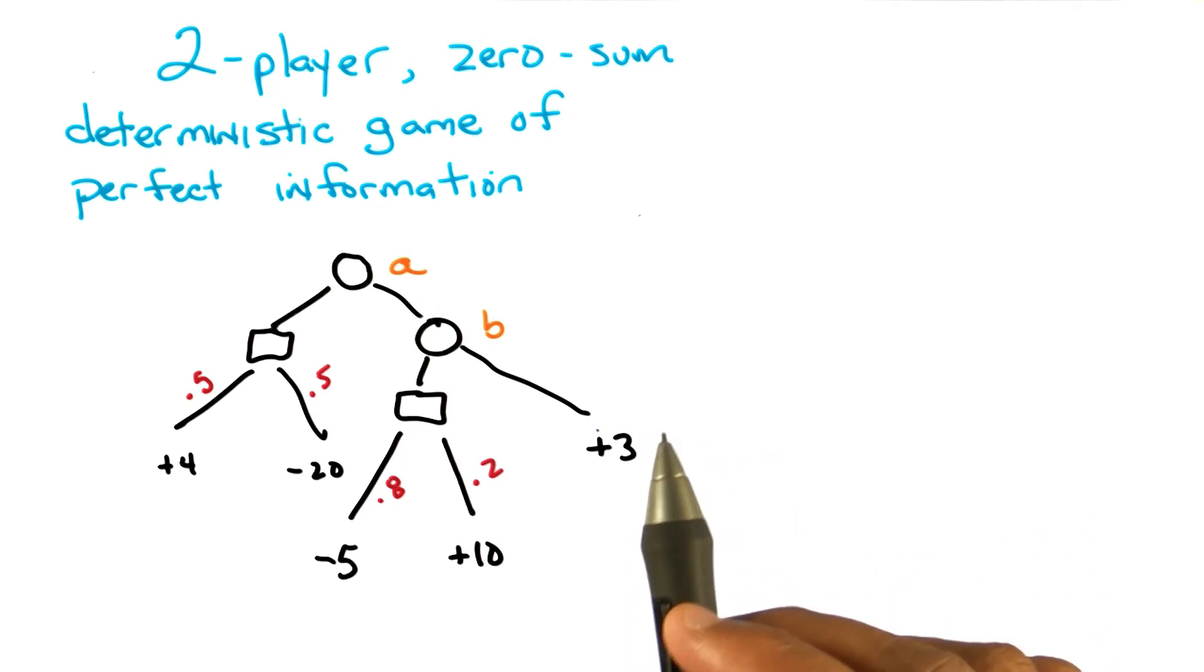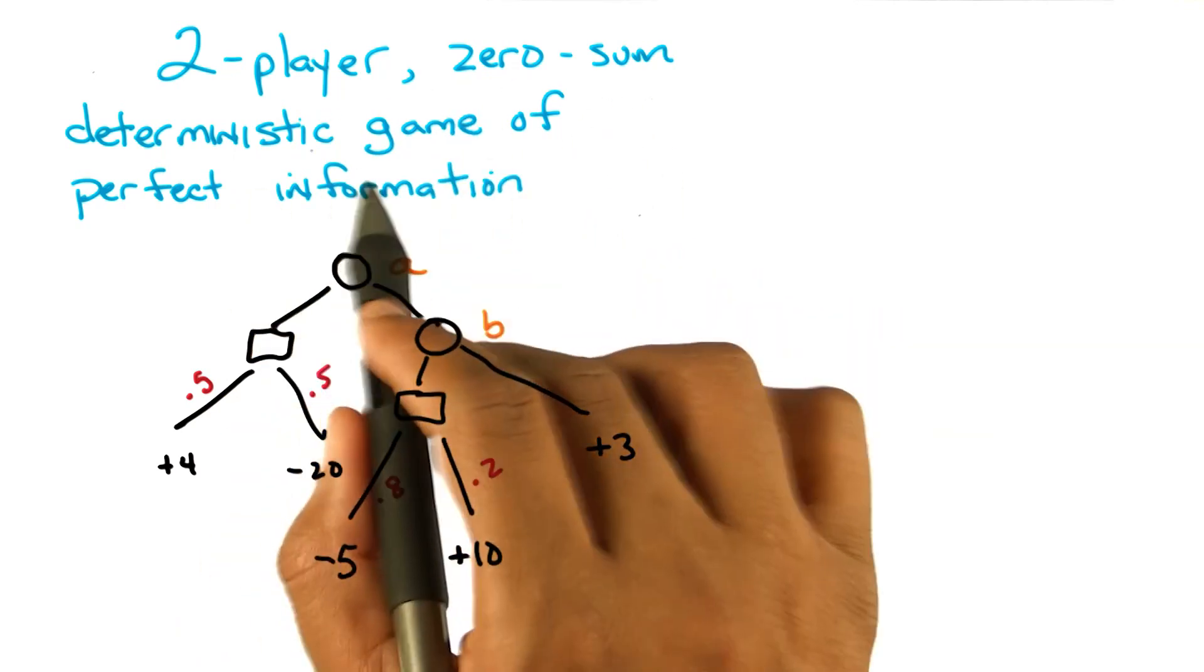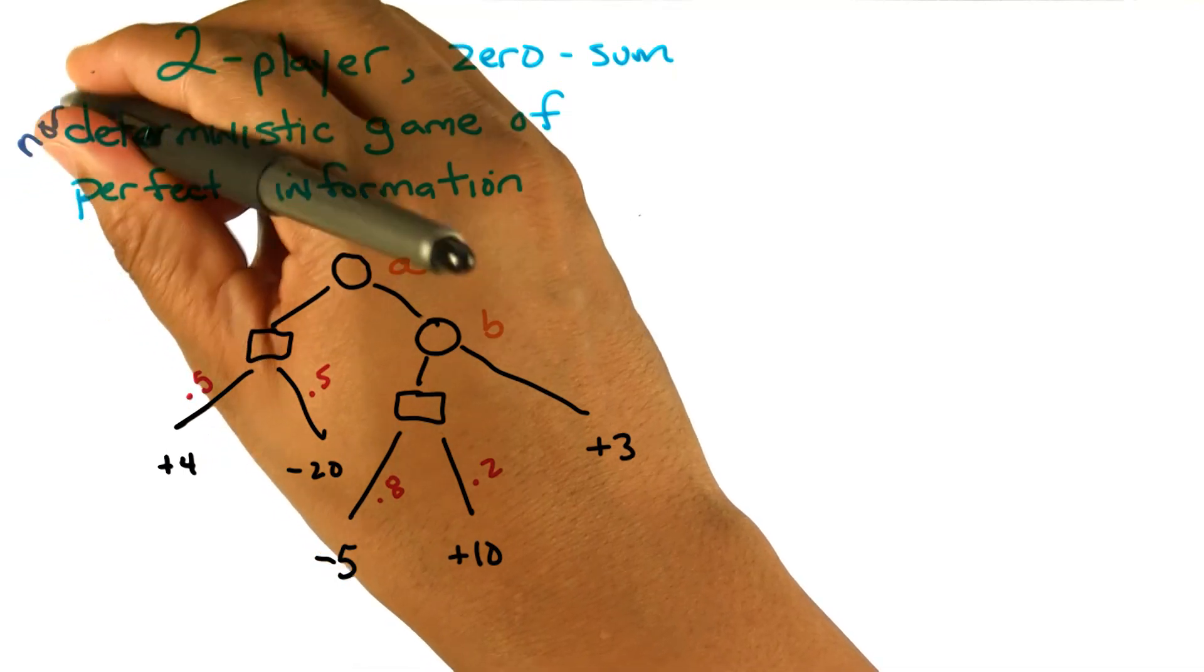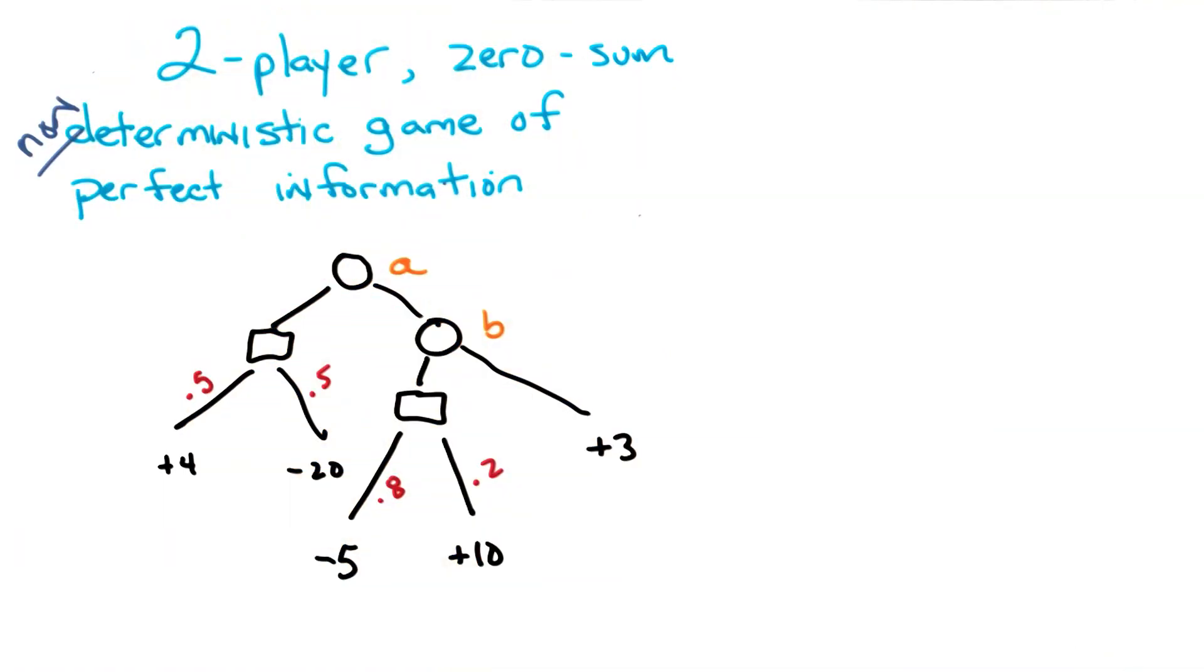So what we've done is we've gone from a two-player zero-sum deterministic game of perfect information to a two-player zero-sum non-deterministic game of perfect information. So we've relaxed. We've gone at least one level up in complexity.